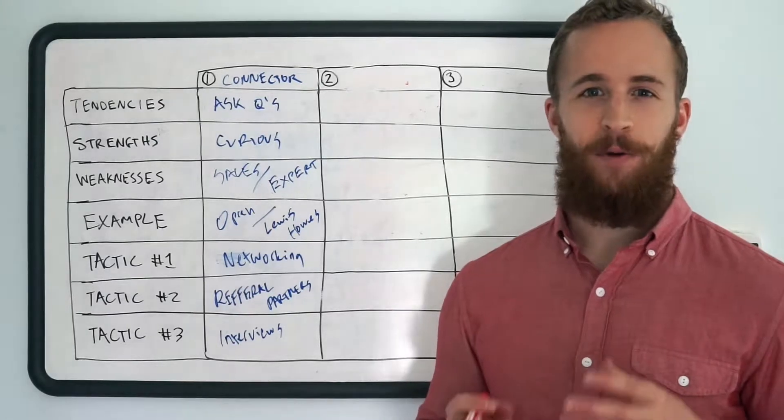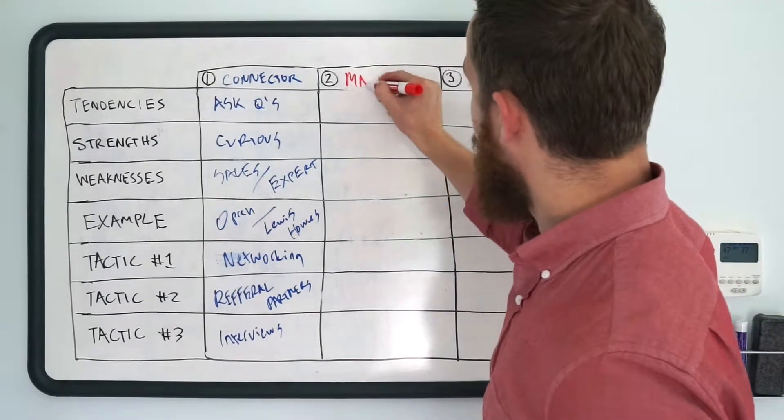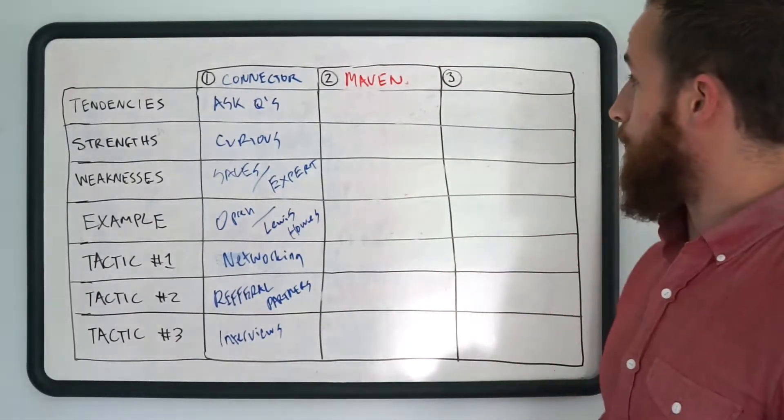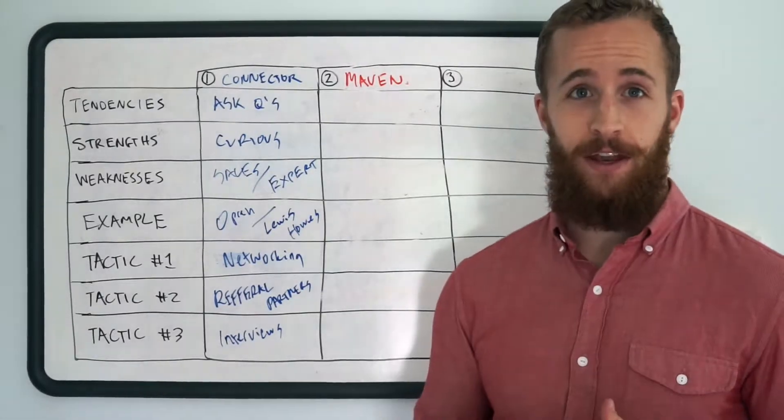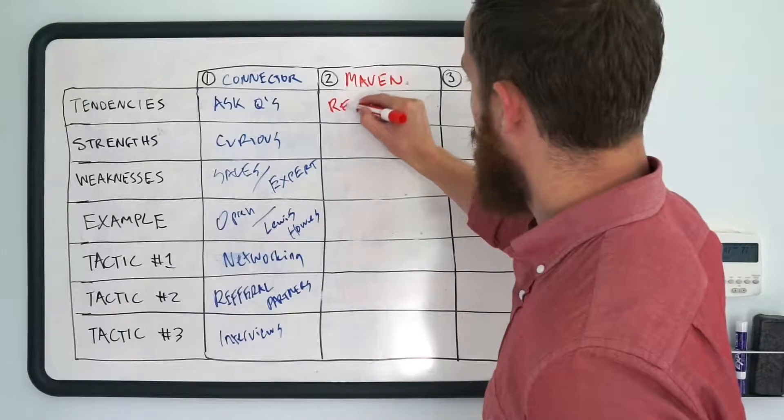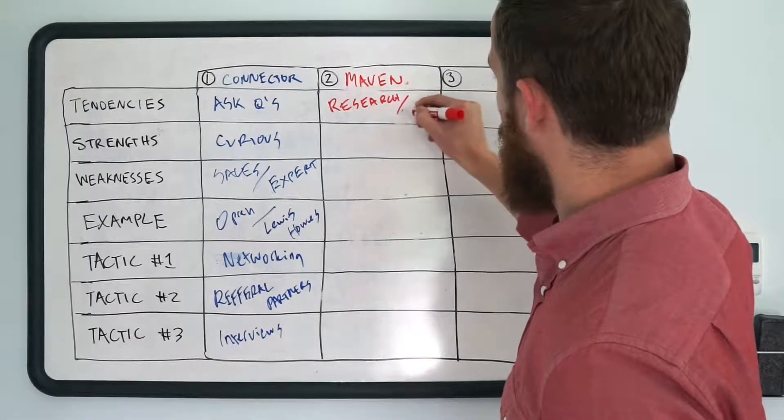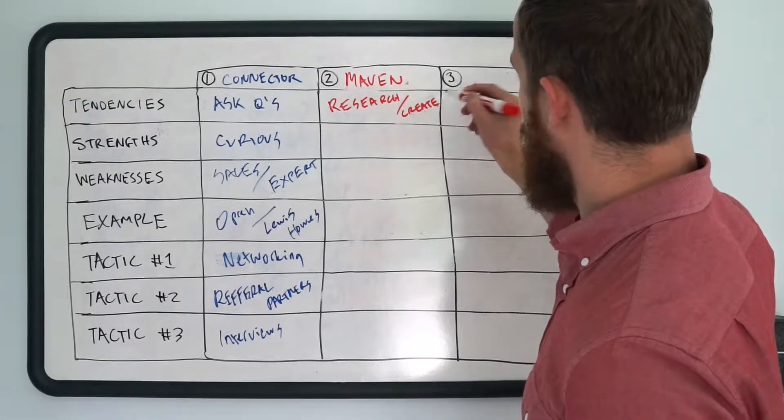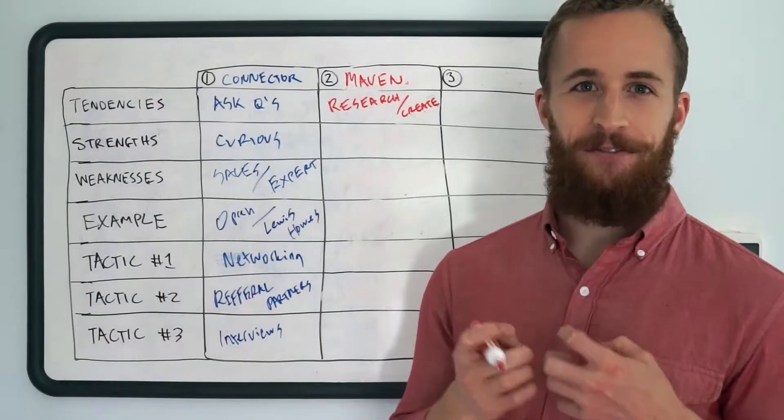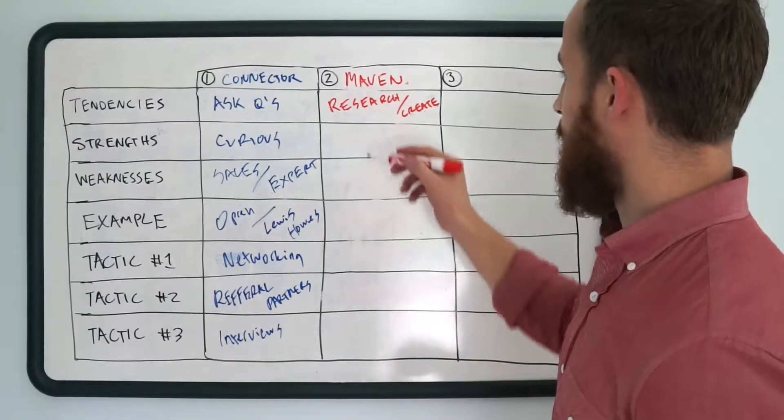All right, our next archetype, archetype number two, is the maven. You can think of mavens just as experts, as authorities, and the tendency of a maven is to research and to create. All right, researching and creating, they love to gather information so they can become more expert in their area of expertise.